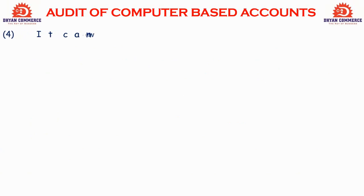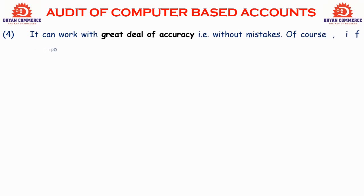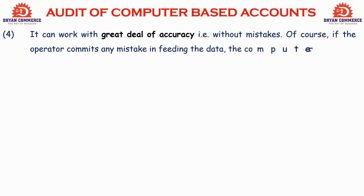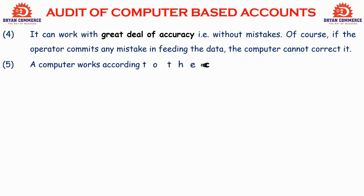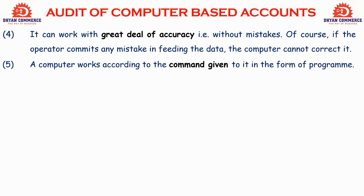The fourth feature is accuracy — a computer can work with a great deal of accuracy, without mistakes. However, if the operator makes a mistake in feeding the data or gives a wrong command, the computer cannot correct it. The fifth feature is that a computer works according to the commands given to it in the form of a program — give a command, and the computer works.